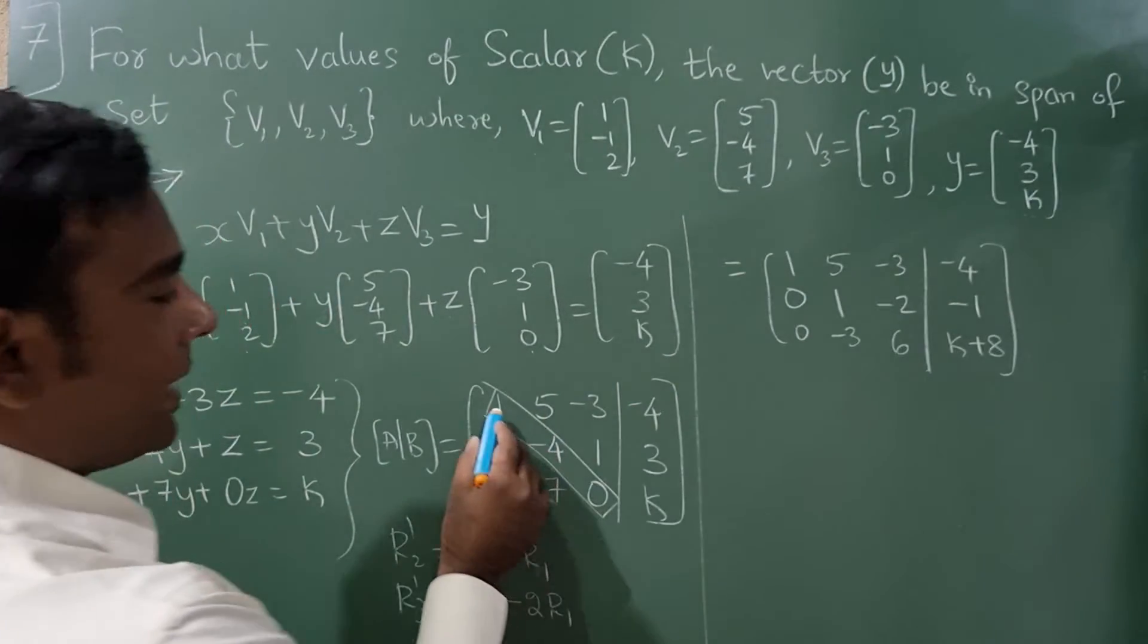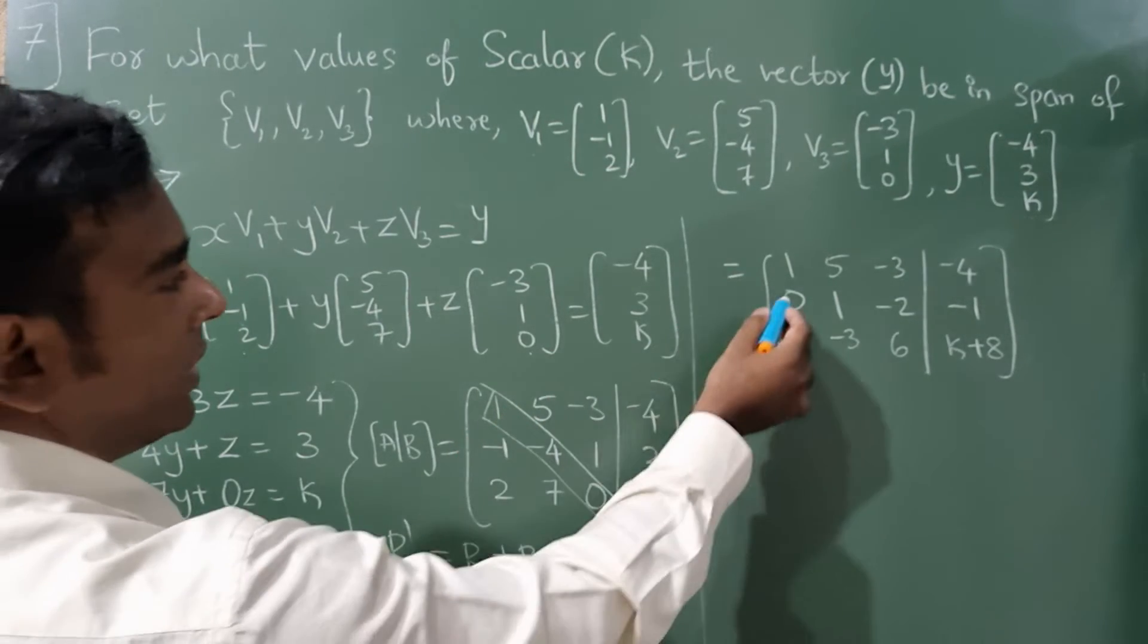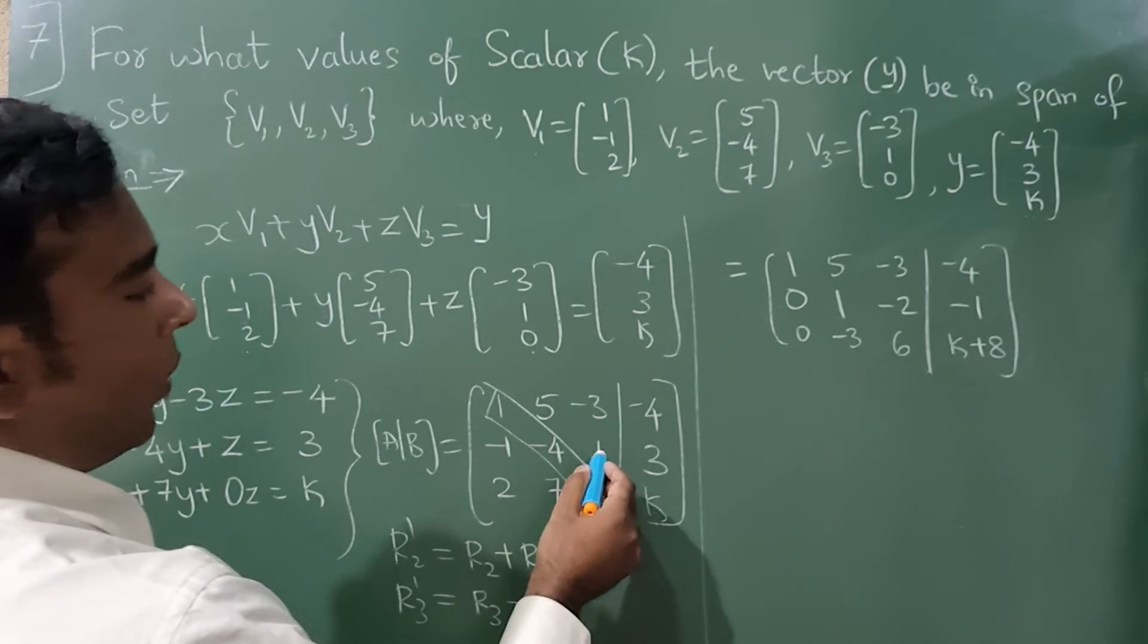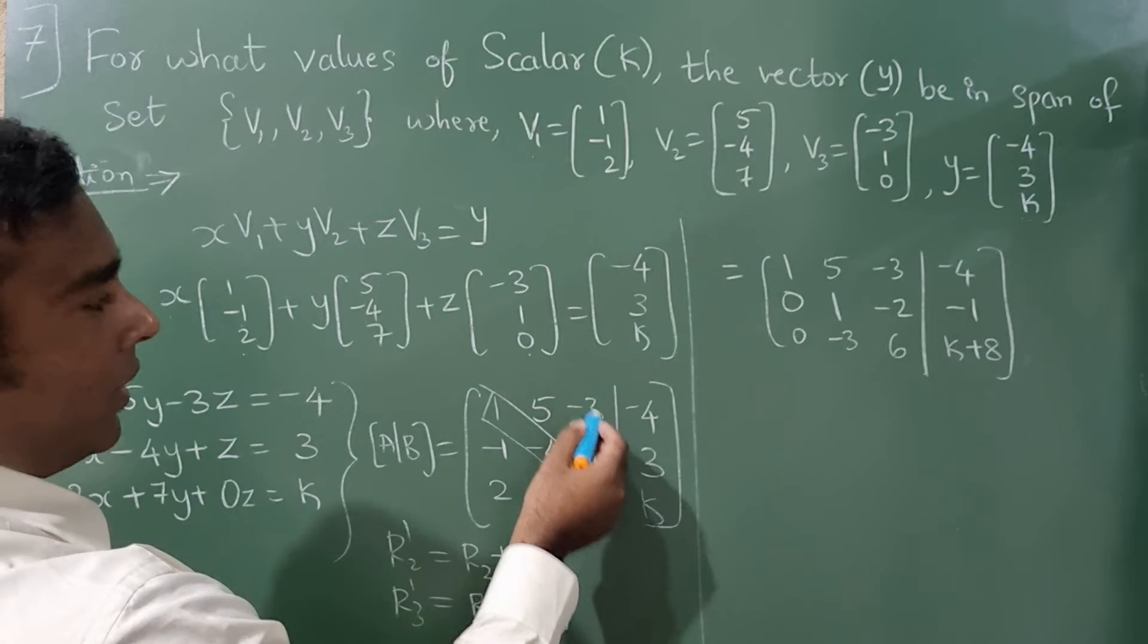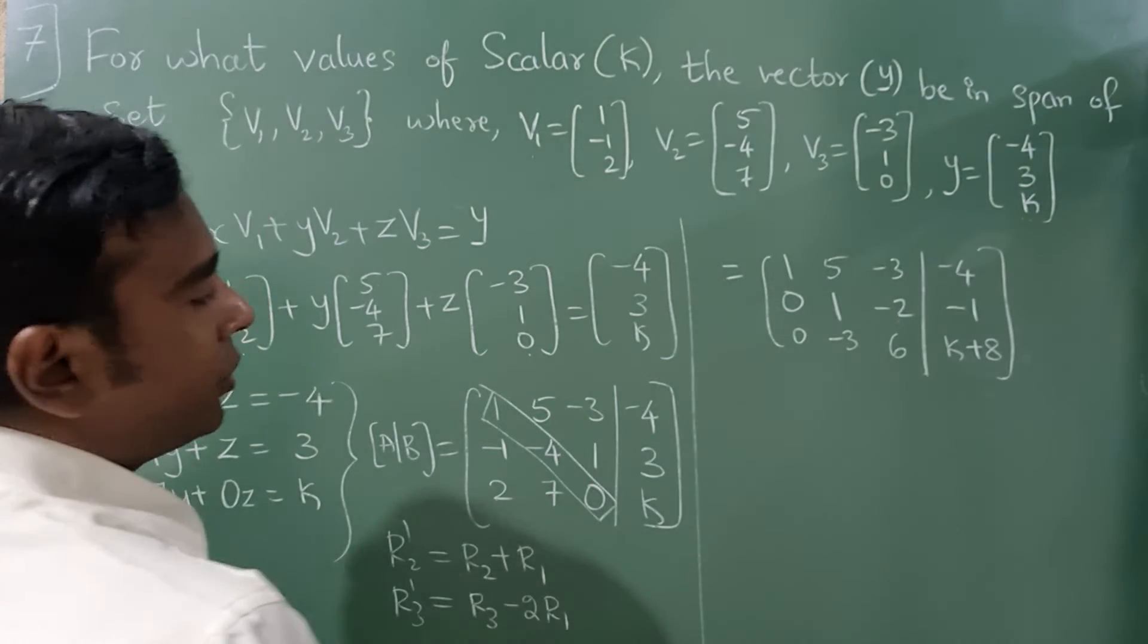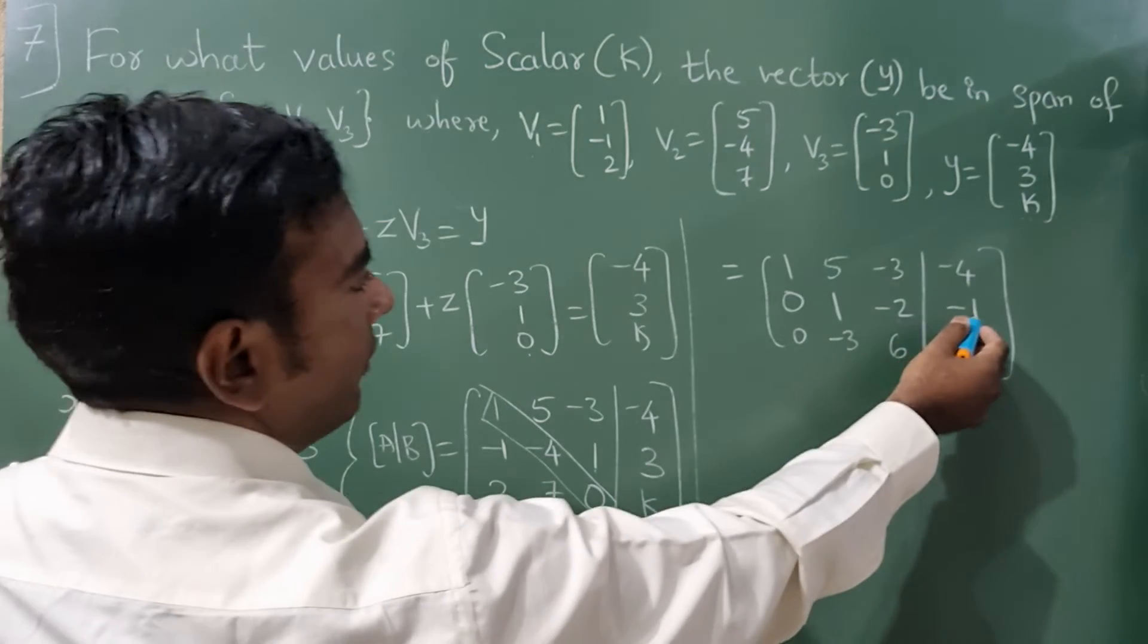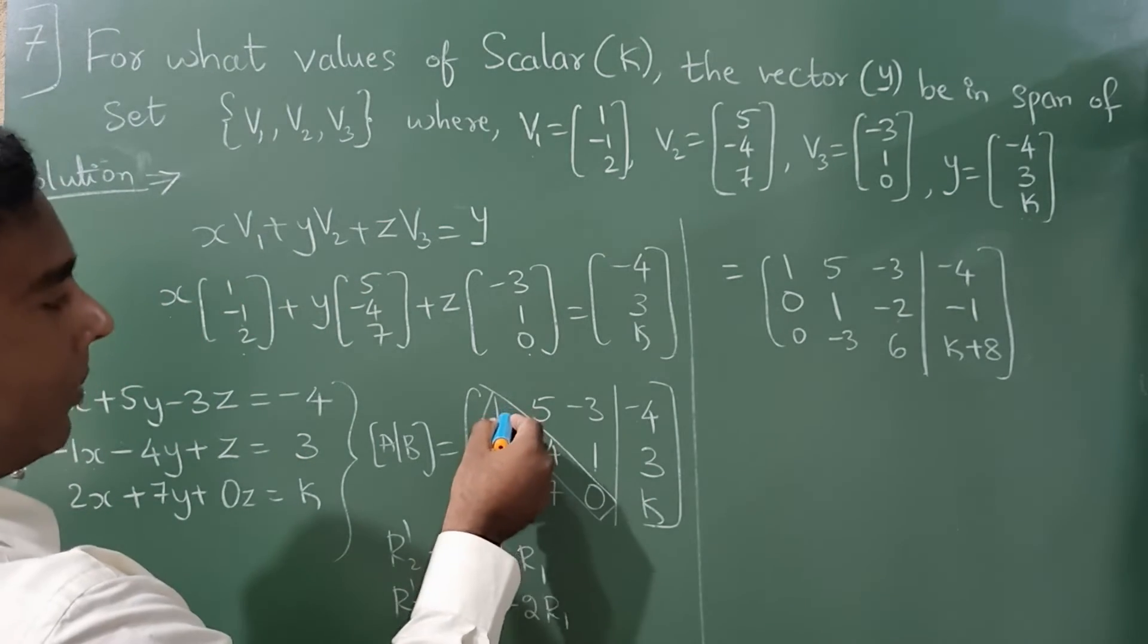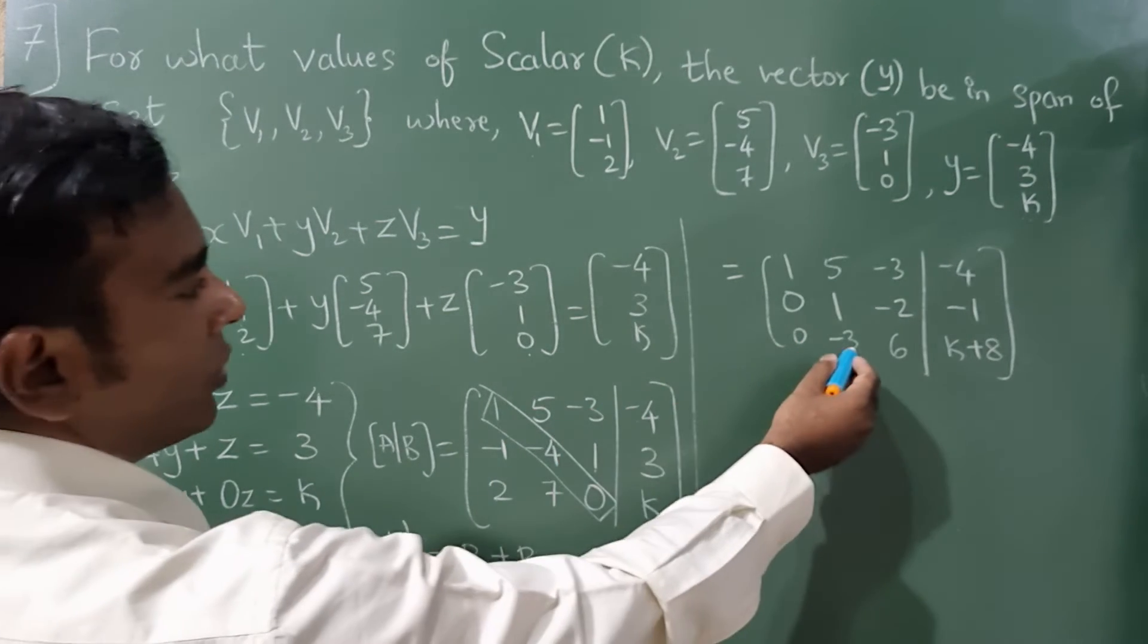Here R1 remain same. R2 will be minus 1 plus 1, 0, 5 minus 4 is 1, 1. If you add this you will get minus 2 here. Minus 3 plus 1 and minus 4 plus 3 will become minus 1.